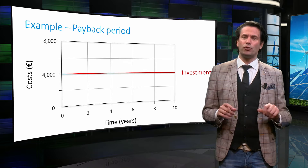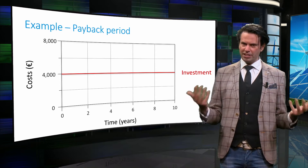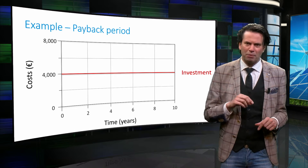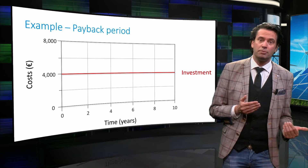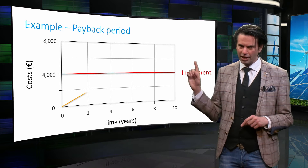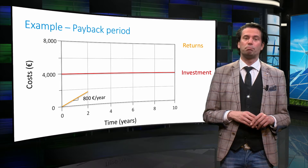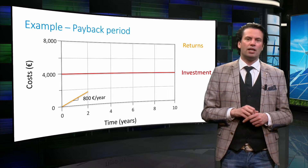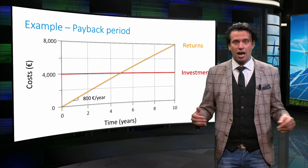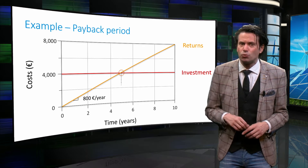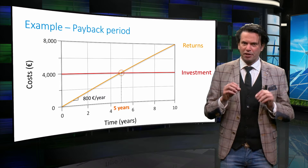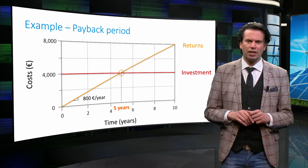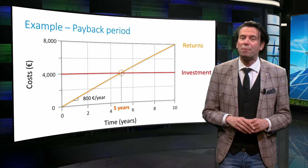Here we see a straight line representing initial investment costs. Since the PV system has no maintenance costs, the overall costs of the system do not increase over the years. As the family uses more of the power produced by the PV system, it offsets the electricity bill accordingly. In our example, the amount saved is €800 per year. In other words, the family earns a return of €800 per year on their investment. As the years progress, the savings accumulate. At some point in time, the savings will exceed the cost of the investment. The period of time from the initial investment to this break-even point is called the payback period. In this case, the Smith family's PV system has a payback period of 5 years.